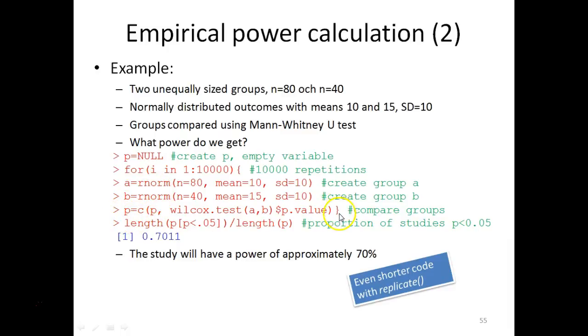And after closing the loop here, we simply calculate the length of p where the results are significant. That is, the number of significant results divided by the total number of studies. That is 10,000 and we get 0.70. In other words, the power of this study will be 70%. And if that's not sufficient for us, then we would have to increase the study size and try again to see what power we get.